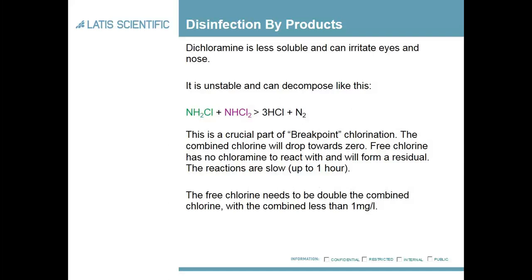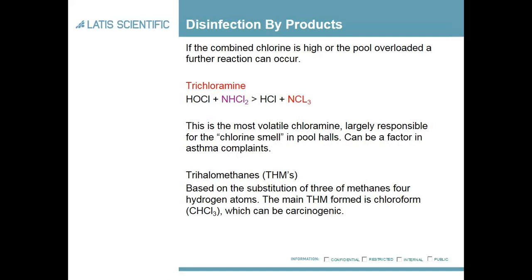As long as the free chlorine has no chloramine to react with, this will form a residual. These reactions are quite slow and can take up to an hour. For this to happen it's key that the free chlorine needs to be at least double the combined chlorine level, with the combined chlorine less than one milligram per litre. If the combined chlorine level is higher than this or if the pool is overloaded, a further reaction can happen in which the dichloramine can form trichloramine.